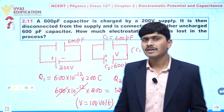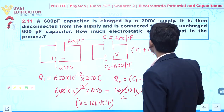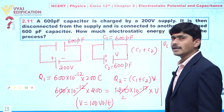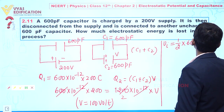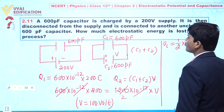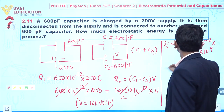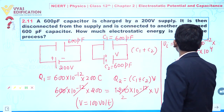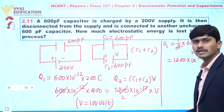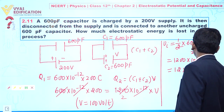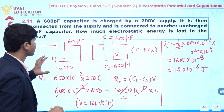Our objective in this question is to calculate the lost electrostatic energy. First, we find the initial energy, which is given by half of C times V squared. C is 600 picofarad and V is 200 volt, so V squared is 4 × 10⁴. This gives us 1200 × 10⁻⁸, which equals 12 × 10⁻⁶ joule. This is the initial electrostatic energy stored in the capacitor.